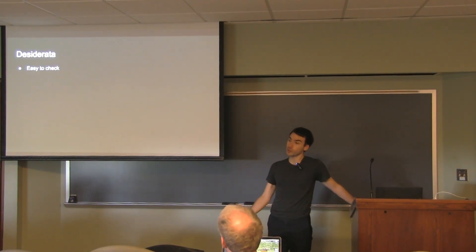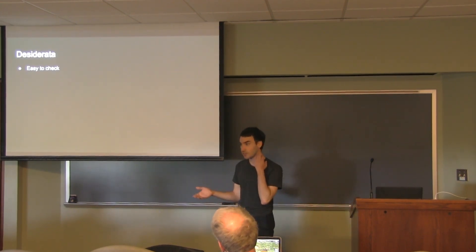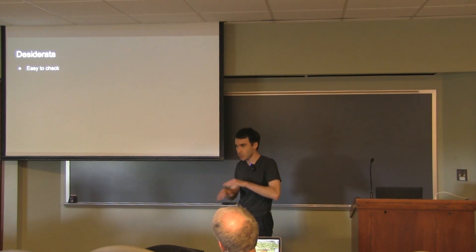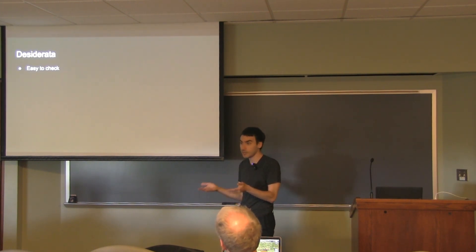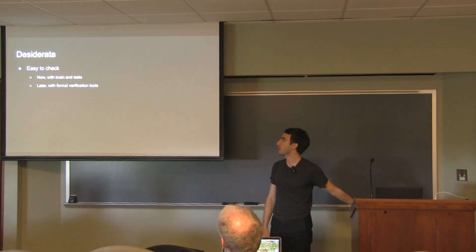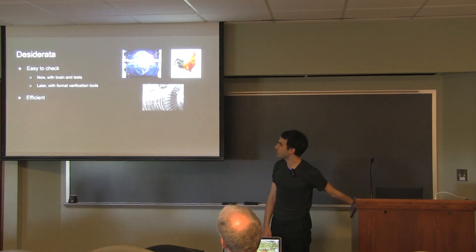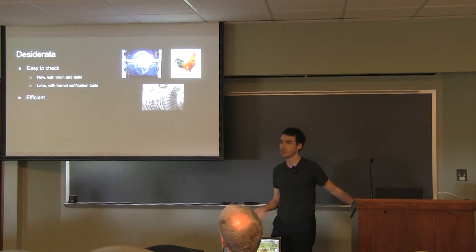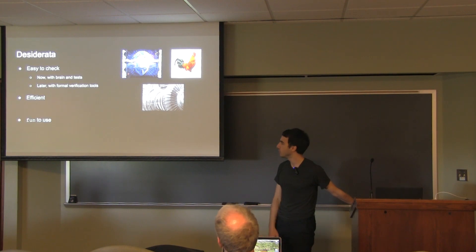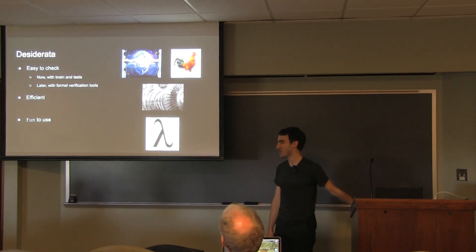Some desiderata — really the same as always. It should be easy to check, which is particularly important because in the applications where you're deploying SNARKs, not having correctness makes the whole system worthless. Your proofs really need to be proofs — we can test them with brains and tests, and later with formal verification tools. They should be efficient. And also, it should be fun to use — functional.